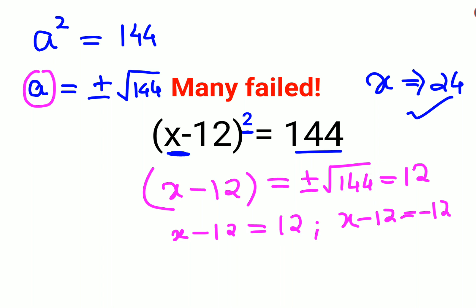Now when you take this minus 12 to the other side, you get x equals 24. And here when you take this minus 12 to the other side, you get x equals 12 minus 12 plus 12, which equals 0. So the value of x is either 24 or 0.